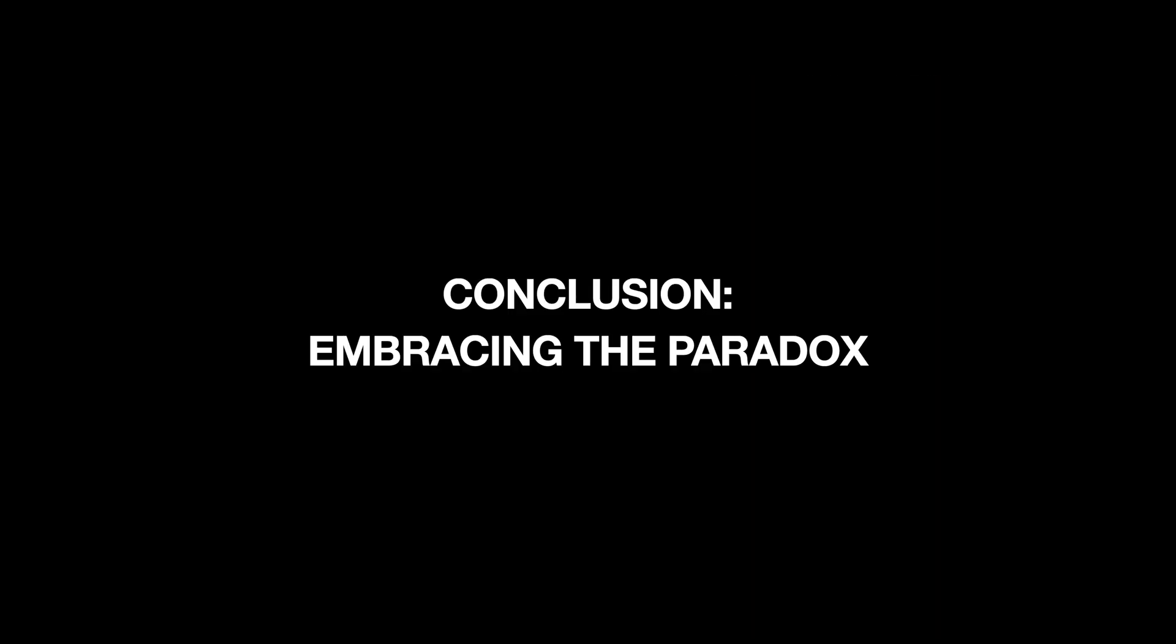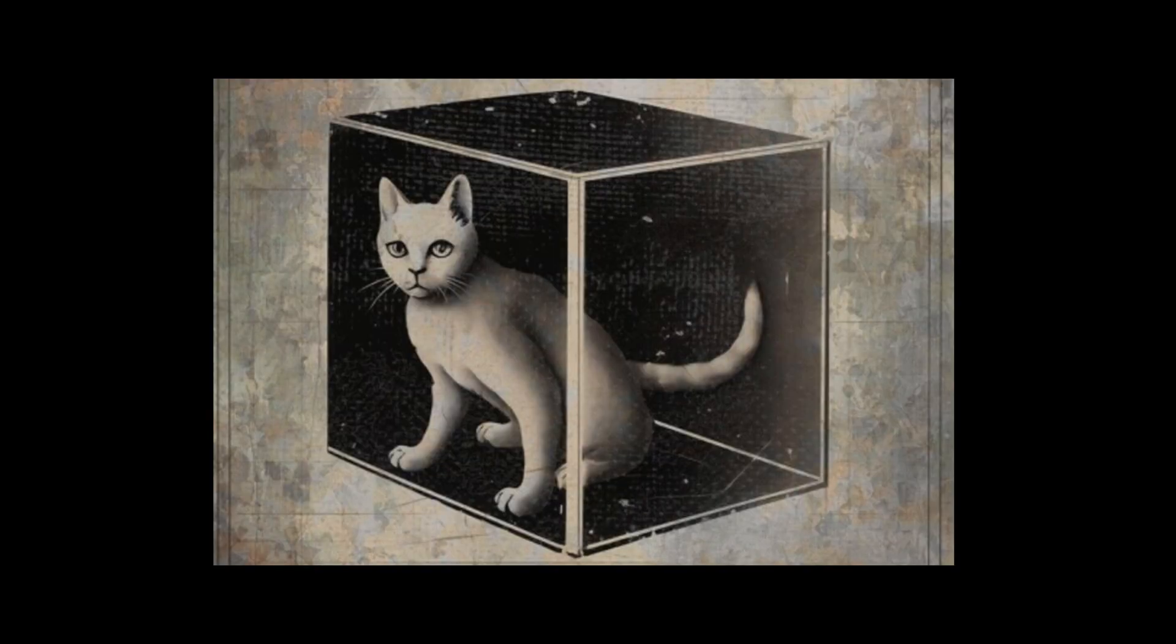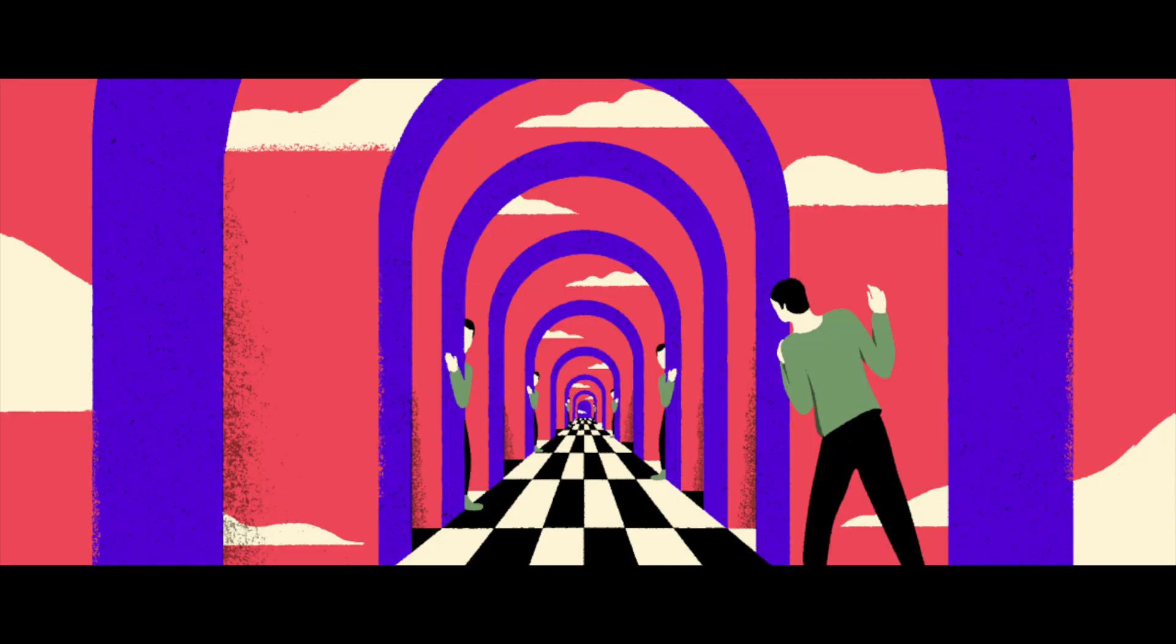Conclusion. Embracing the paradox. In conclusion, Schrödinger's Cat serves as an intriguing entry point into a vast tapestry of inquiries lying at the intersection of quantum physics, philosophy, and metaphysics. The paradox of the Cat encapsulates the bewildering realities of quantum mechanics, while compelling us to confront profound questions about existence, knowledge, and the nature of reality itself.